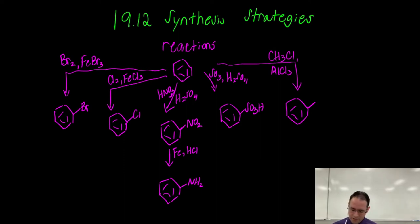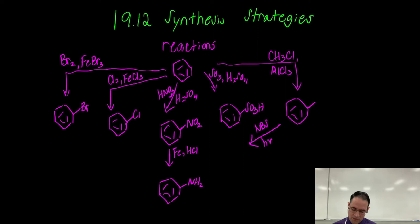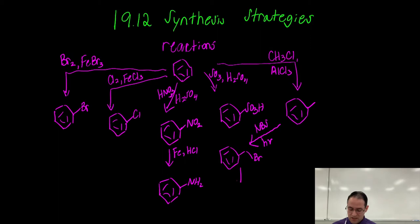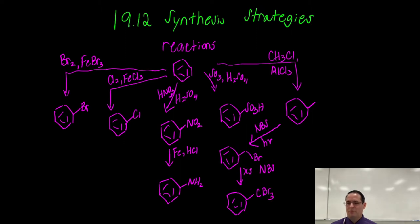A key reaction to remember is that toluene can be reacted with N-bromosuccinimide and some initiator such as light, heat, or a peroxide to do benzylic halogenation. If you have excess N-bromosuccinimide, you can get the tribromomethyl group. This is discussed in Section 18.6 if you want to go back and look at that.